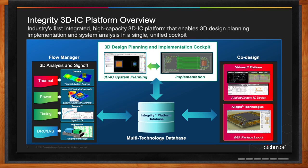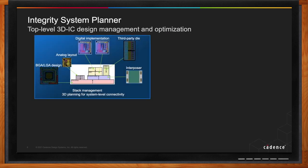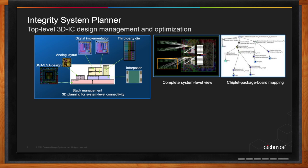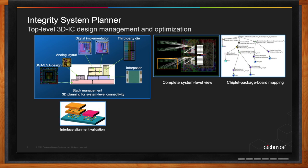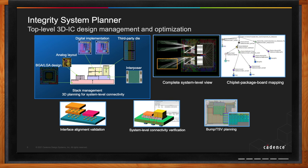The system planner is at the front-end side where you are planning the whole system and doing stack management for system-level connectivity. It gives you a way to represent all the components in your 3D design — you might have a couple of dies and a layer of interposer, a third-party die like an HBM from an IP provider, and a package BGA or LGA design at the bottom. The relative location of each component can be decided in the system planner.